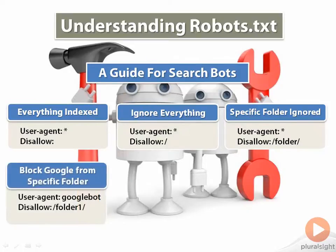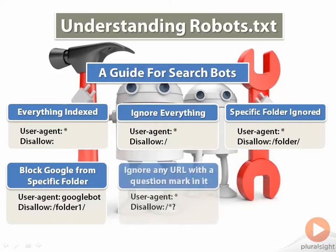Next is blocking specific bots. As you can see in the user-agent section of this example, I have listed Googlebot instead of just putting an asterisk. I am singling out Google and telling the bot to not go to folder 1. Keep in mind that this command doesn't stop other search engines from accessing folder 1. You could easily swap out Googlebot for Bingbot or Slurp, which is Yahoo's search bot. To block search bots from crawling any URLs that indicate a question mark, you would use this command. You can use the dollar sign to inform the bots to match the end of the string.